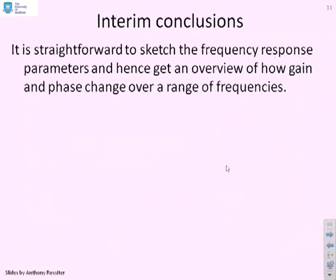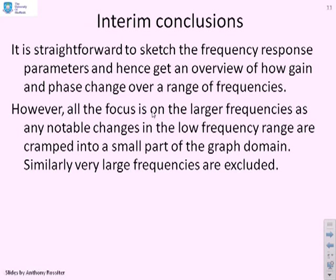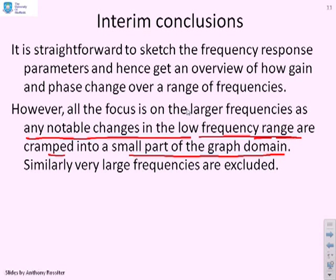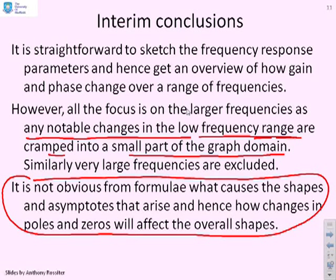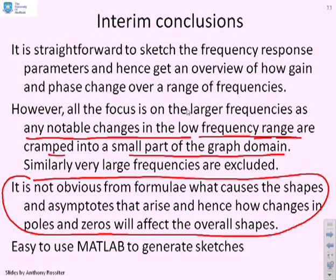Some interim conclusions: it's straightforward to sketch the frequency response parameters and get an overview of how gain and phase change over a range of frequencies. However, most of the space on the graph is given over to larger frequencies, so notable changes in the low frequency range are cramped into a small part of the domain, and very large frequencies are not included. Perhaps most critically, it's not obvious from the formulas what causes the shapes and asymptotes that arise, or how changes in poles and zeros will affect the overall shapes. So yes, we can sketch these plots, but what we really want is insight into what the plots look like and why.